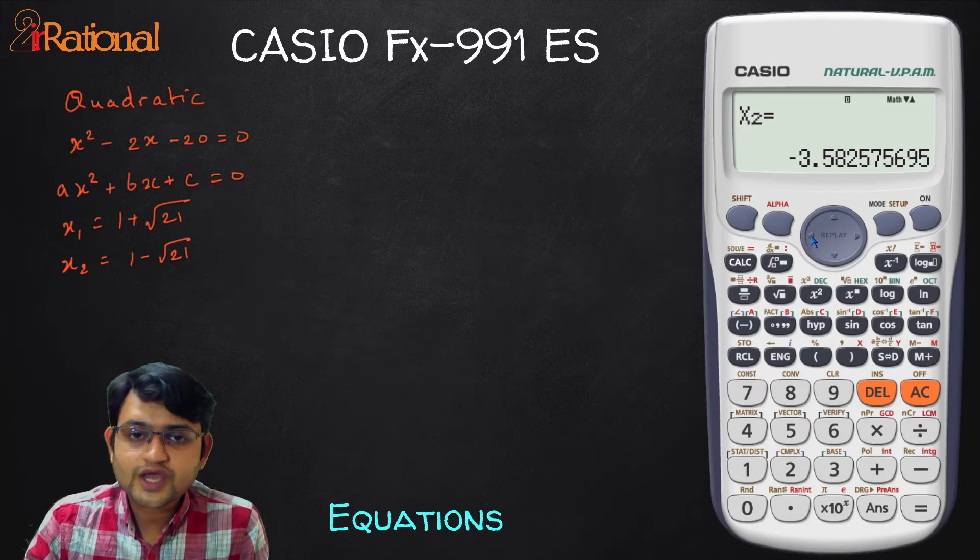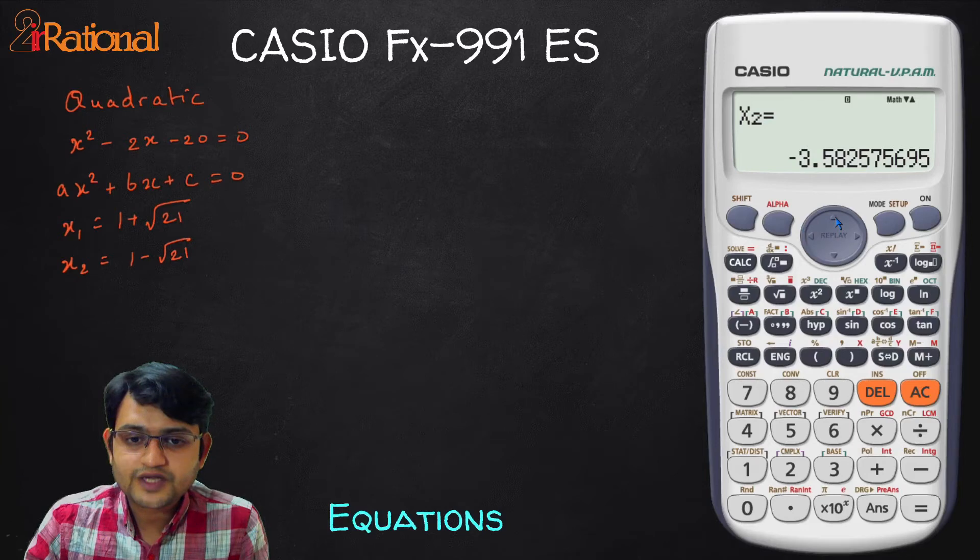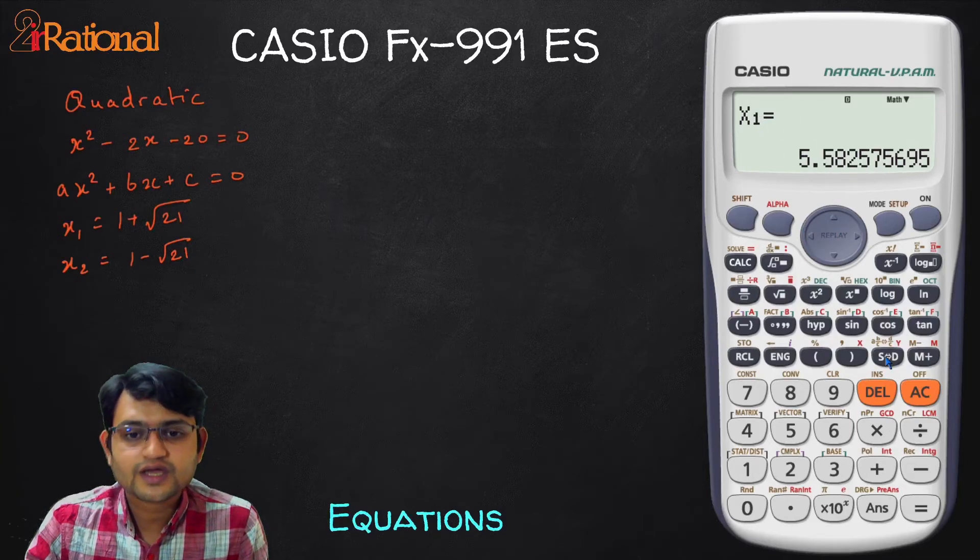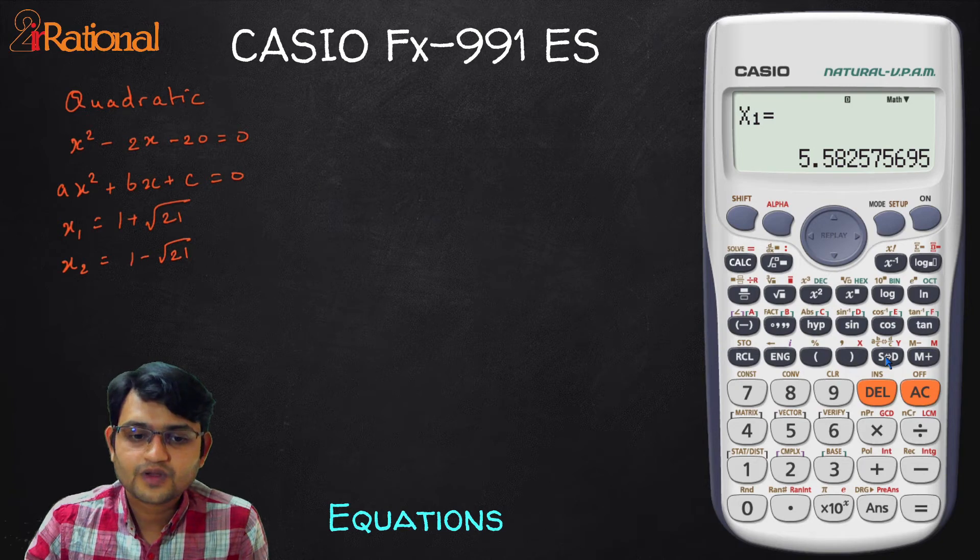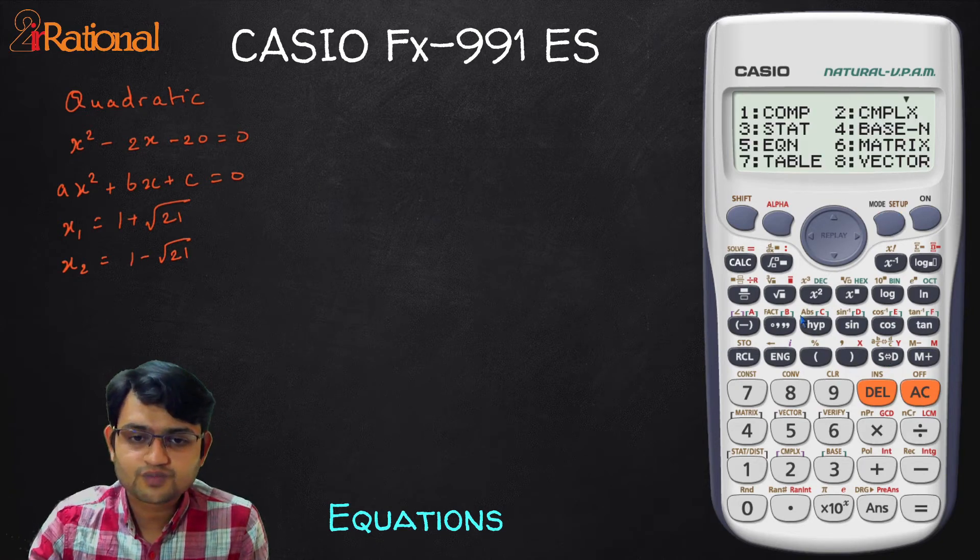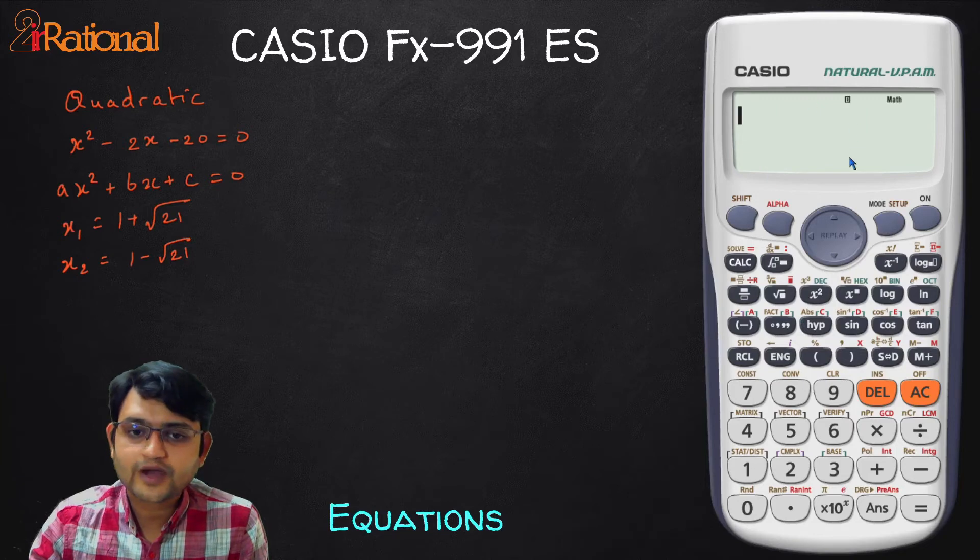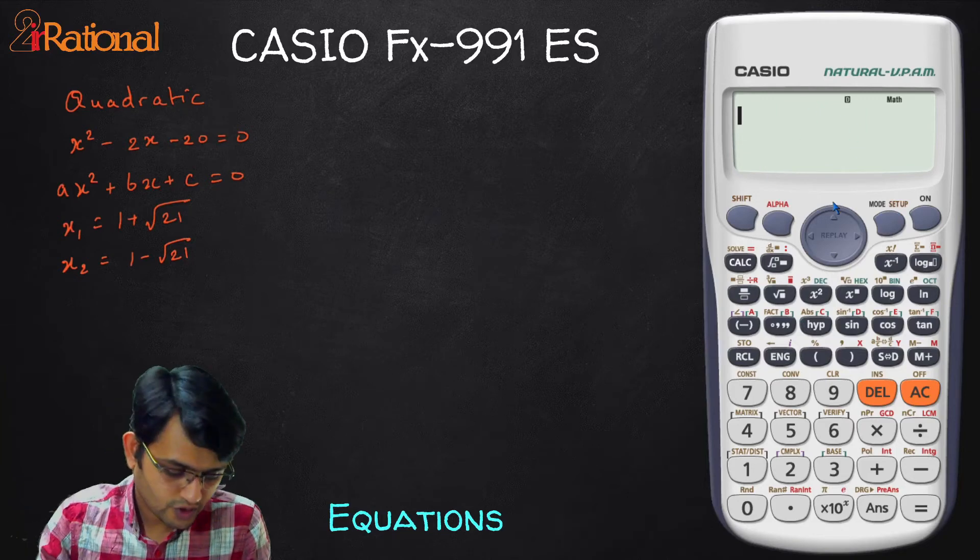If you want to check your previous value you press up arrow key and we go to X1. You can again check it in decimal form. Now if you want to go out of this all you have to do is mode and 1 you go back to your normal mode or computation mode.